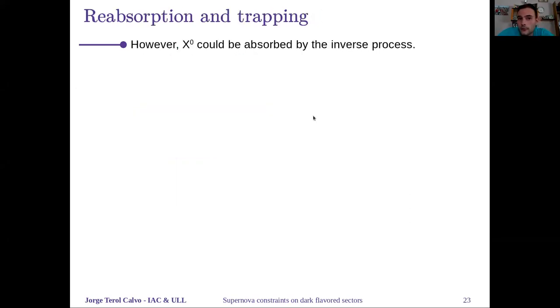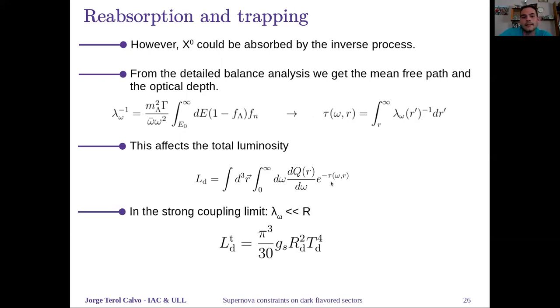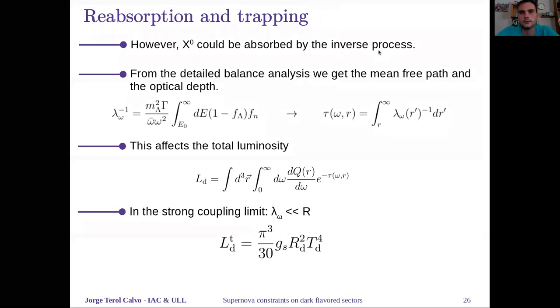We have to take into account the inverse process for the absorption of this X0 boson—a neutron can capture this X0 and become a lambda. We have taken this into account by doing a detailed balance analysis. One can get the mean free path and the optical depth, which is included in the dark luminosity calculations with damping. In the very strong coupling limit where the mean free path is smaller than the radius of the proto neutron star, we get a dark sphere that emits like a black body with this expression.